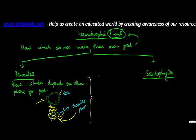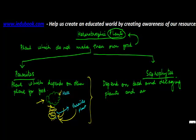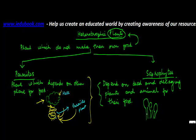Now let's understand about saprophytes. As compared to parasites, saprophytes depend on dead and decaying plants and animals. Something like a mushroom — have you seen these mushrooms which grow in multiple numbers wherever dead plants are there? They feed on this dead and decayed material, which could be either plant or animal, for their food. So the first example is mushroom.